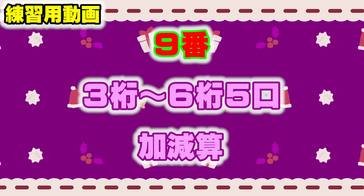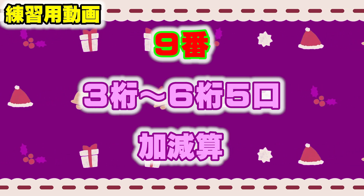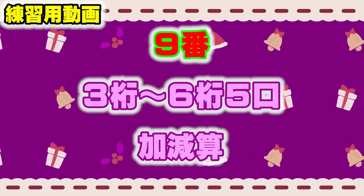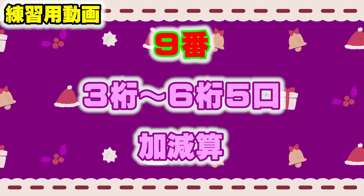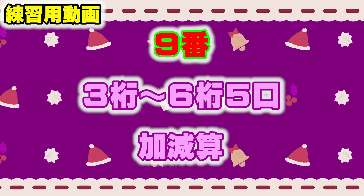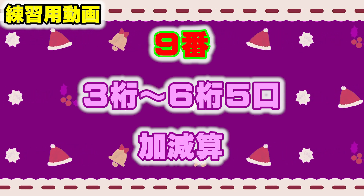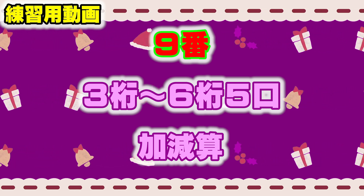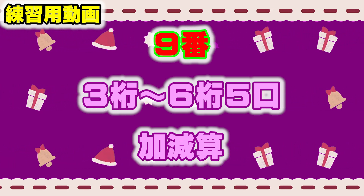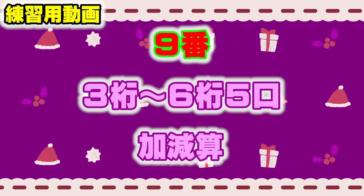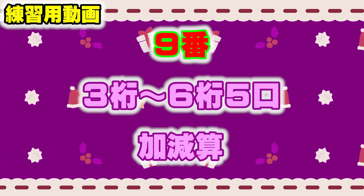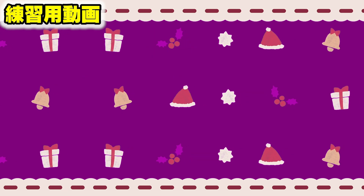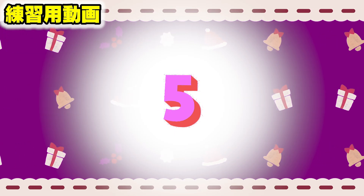問題9: 3桁から6桁、極値、加減算の問題です。Start with 75,759,823, minus 759,823, minus 10,462, minus 650, minus 3,179, minus 823,823. 9番の回答欄に答えを書いてください。(Please write your answer in the answer column for question 9.)